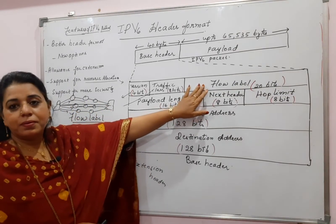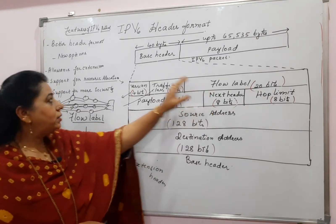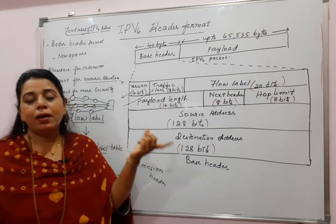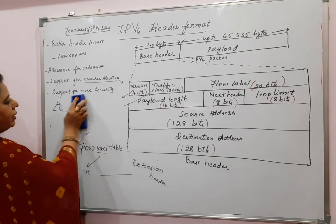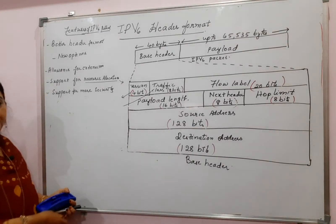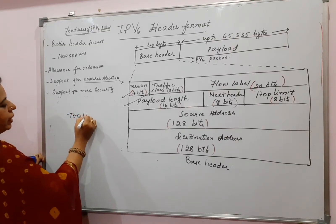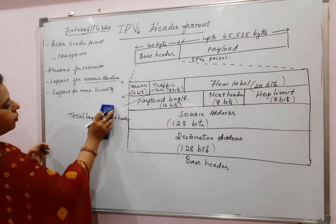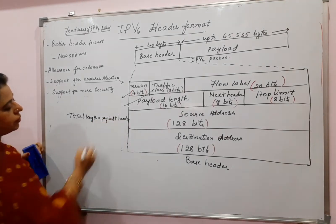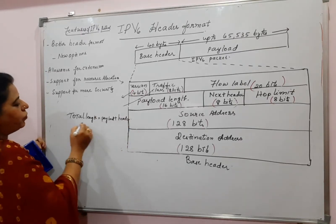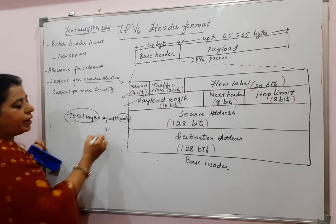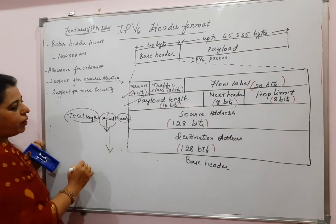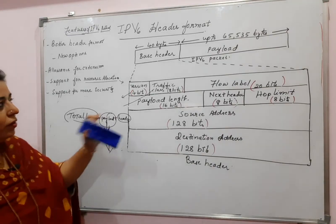The next field is payload length — this is very simple. In IPv4, the total length was given, which is the data length plus the header. But here in IPv6, the field is payload length — the size of the payload is given directly. Since the header size is known, you can then determine the total length. This is the difference in IPv6.